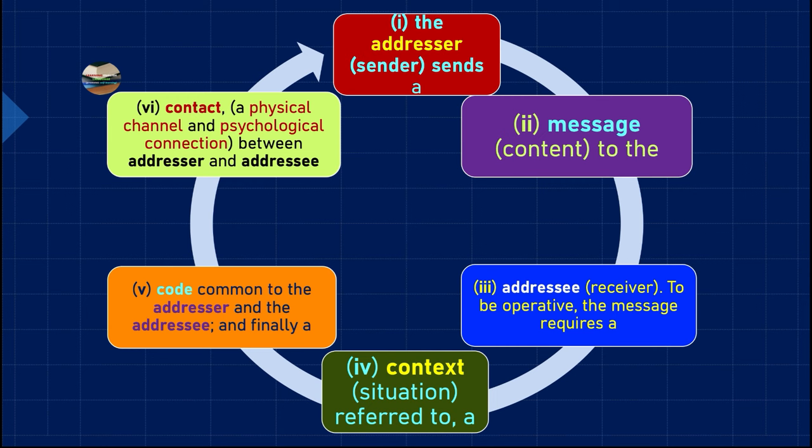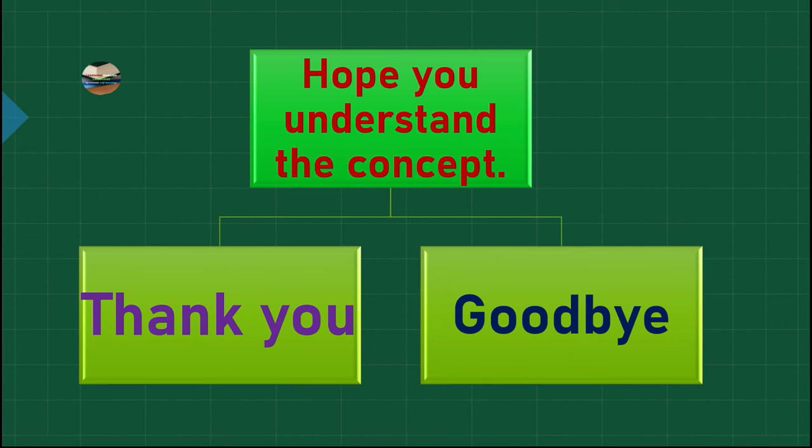So these are the six most important factors or elements in the functions of language — necessary for any communication to be successful. This is a very scientific analysis of how communication takes place and how it should be successful. I hope you understand the concept. Thank you and goodbye.